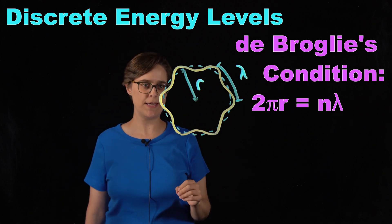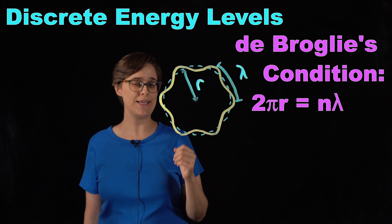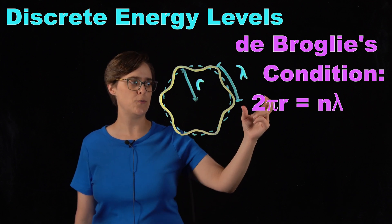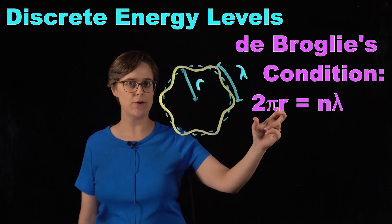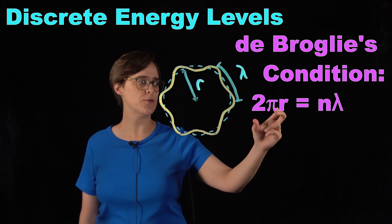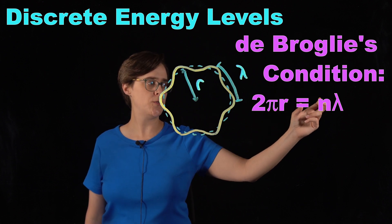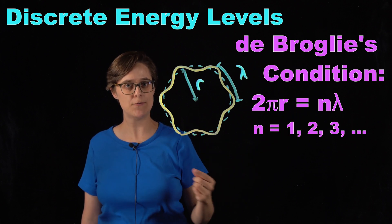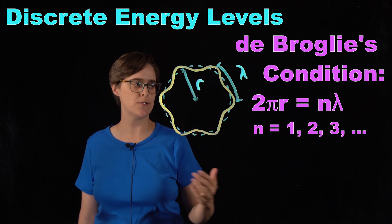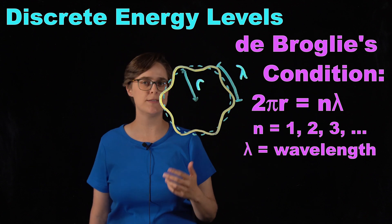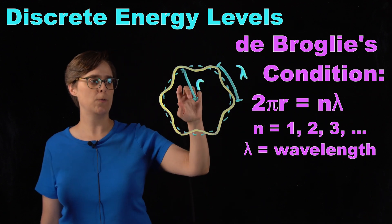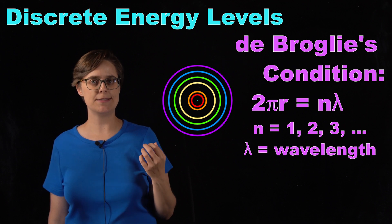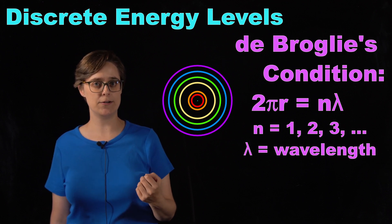This is going to be the case whenever you have an integer number of wavelengths as your circumference. So 2πr is the circumference of the circle, and it equals n times lambda. n is an integer number — meaning counting numbers: 1, 2, 3, 4, 5, and so on. Lambda is wavelength. So there would be a series of discrete energy levels that are allowable. You can calculate them by plugging 1, 2, 3, 4, 5, 6, and so on into n.